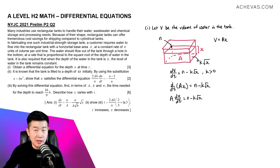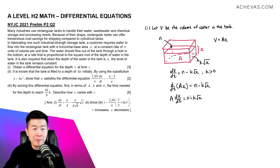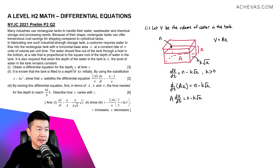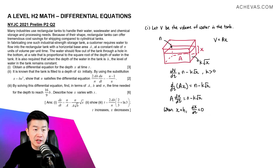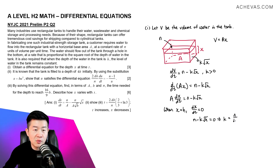k is something we have introduced, and we should check whether the question gives us enough information to solve for k. It is actually possible here. According to the question, when the depth of the water in the tank is h, the level remains constant — meaning dx/dt = 0 when x = h. So replacing: n minus k√h = 0, which gives us k = n over √h.